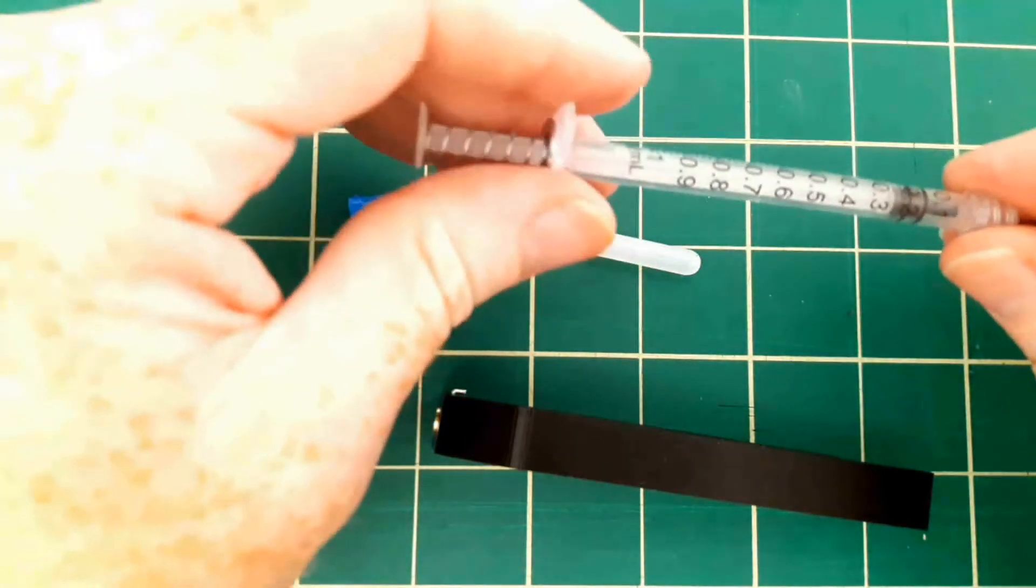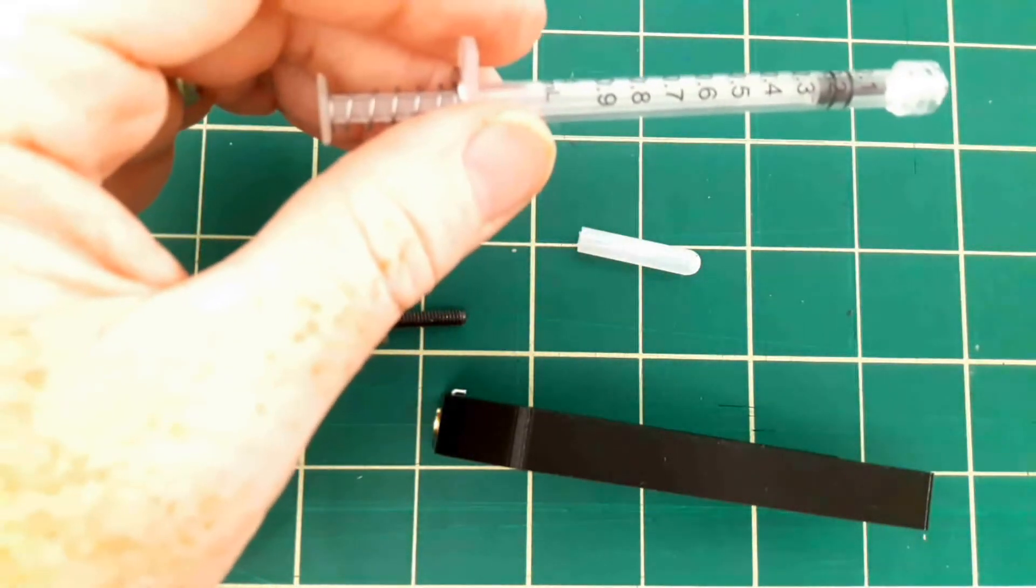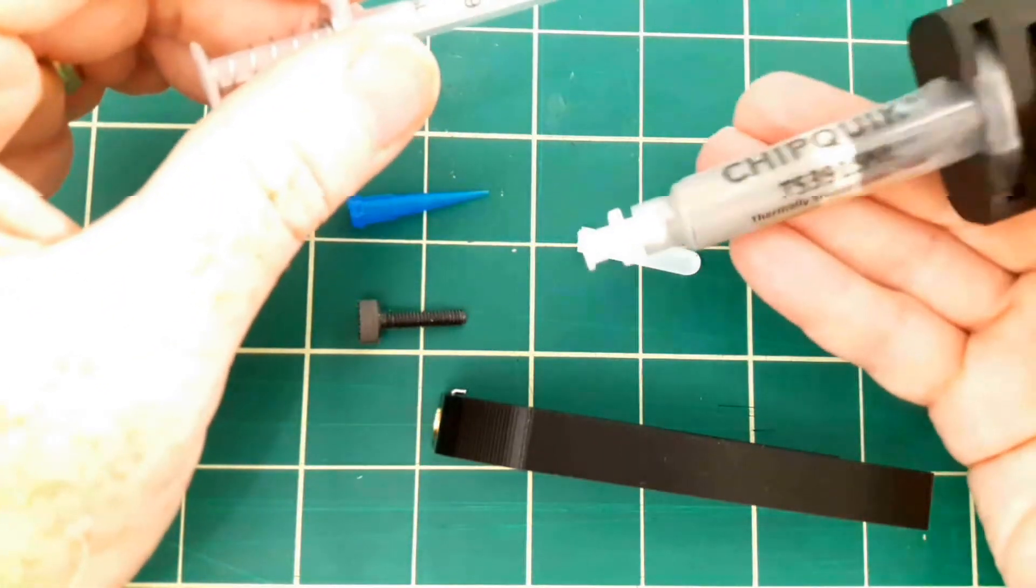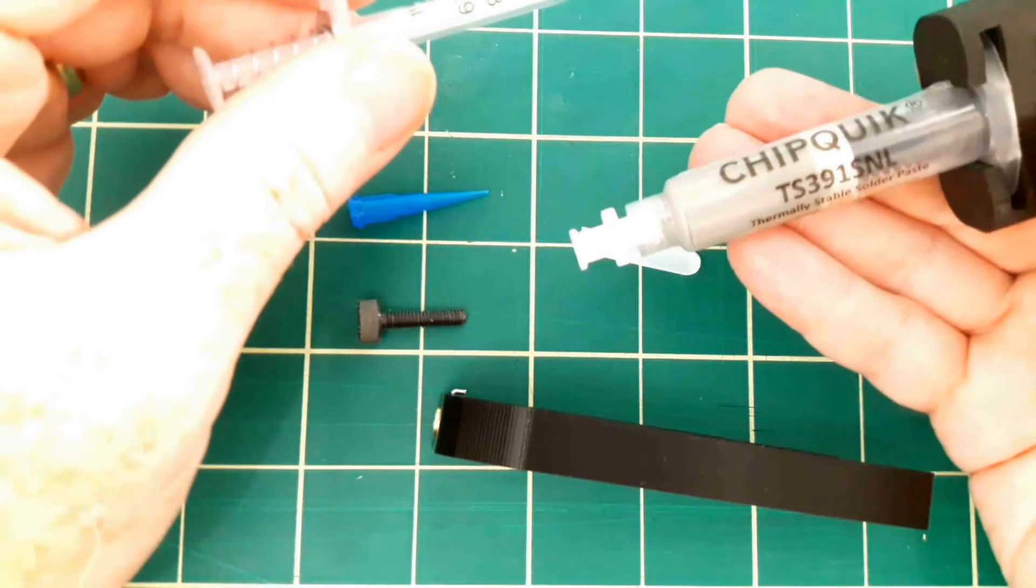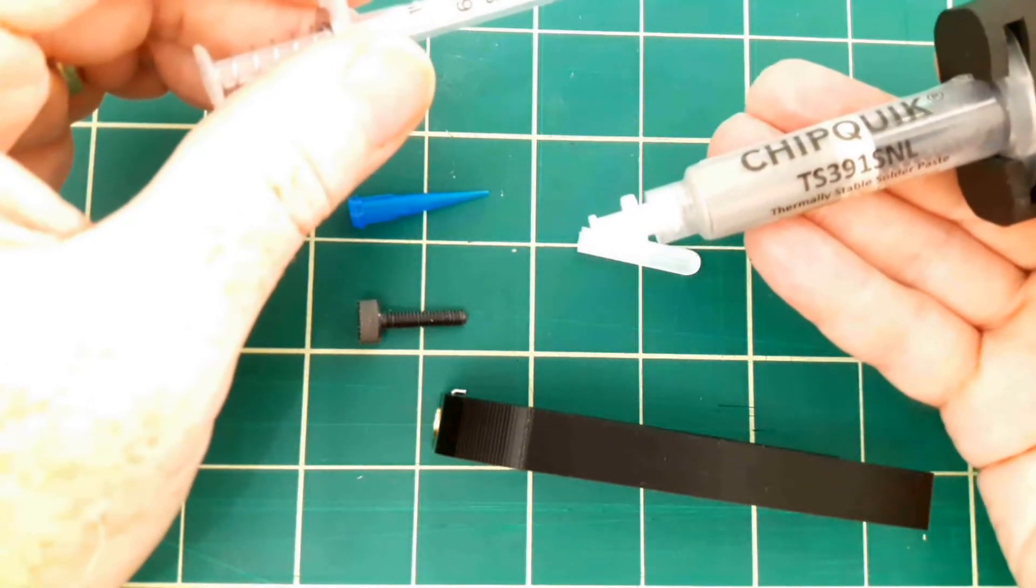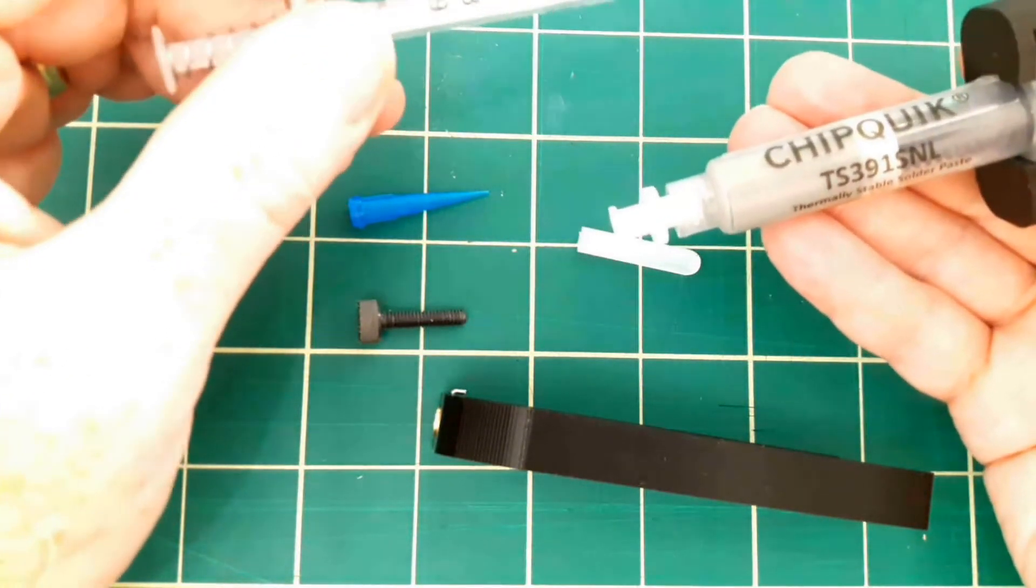And now what we're going to do is fill this with solder paste. I have here a five cc syringe of thermally stable SAC 305 lead-free solder from ChipQuick. It's a really nice solder.